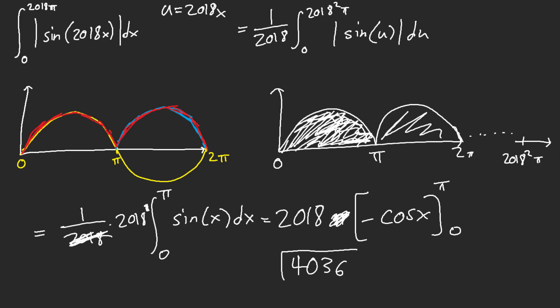So, you get 2018 times 2, and your answer should be 4036, in which, I believe that's what the answer key says. Yep, 4036.